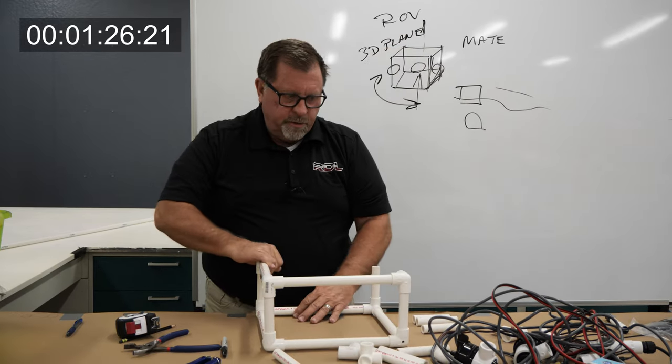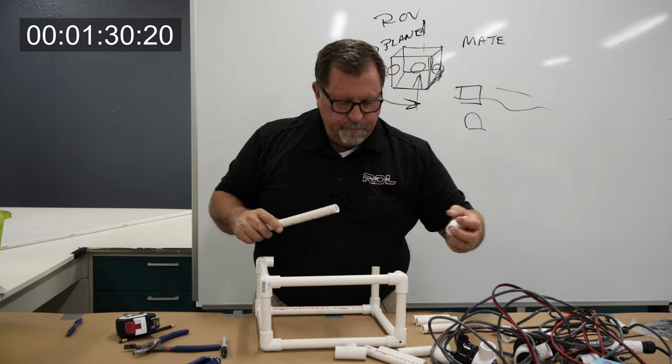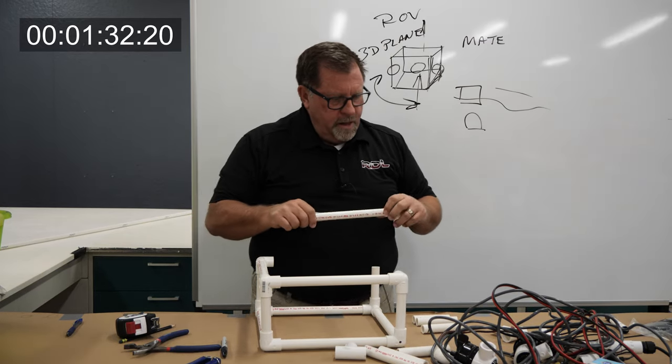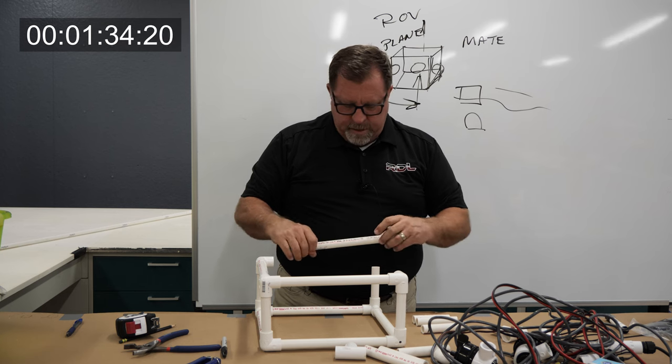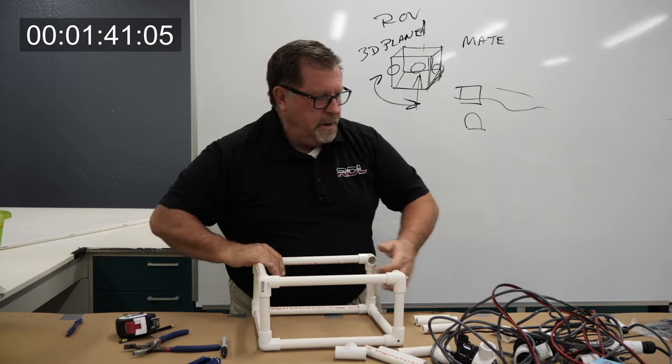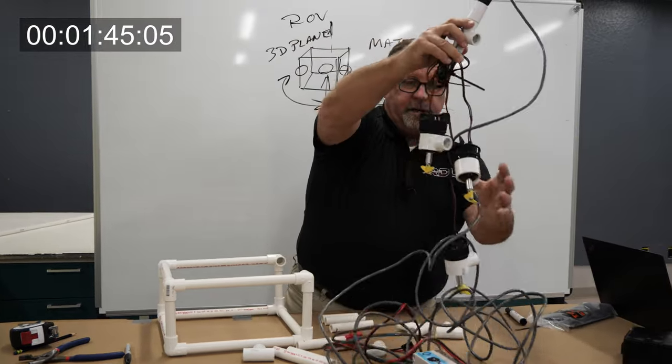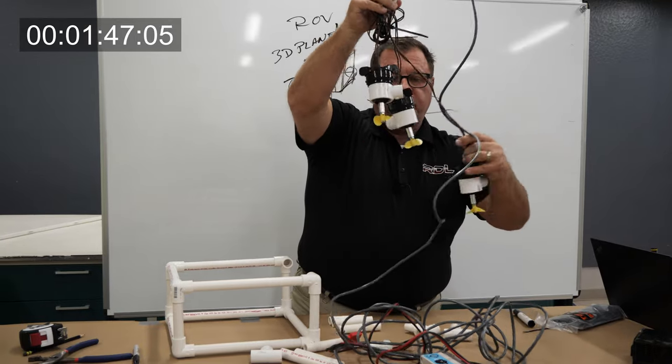So we've got the front. We also have to make sure that we identify the front and the back of the ROV. So we have what we call a T-Cross, which is going to be where our control tether comes in on the very rear of the machine. So that's what this is right here. So you can see these are already pre-soldered in.